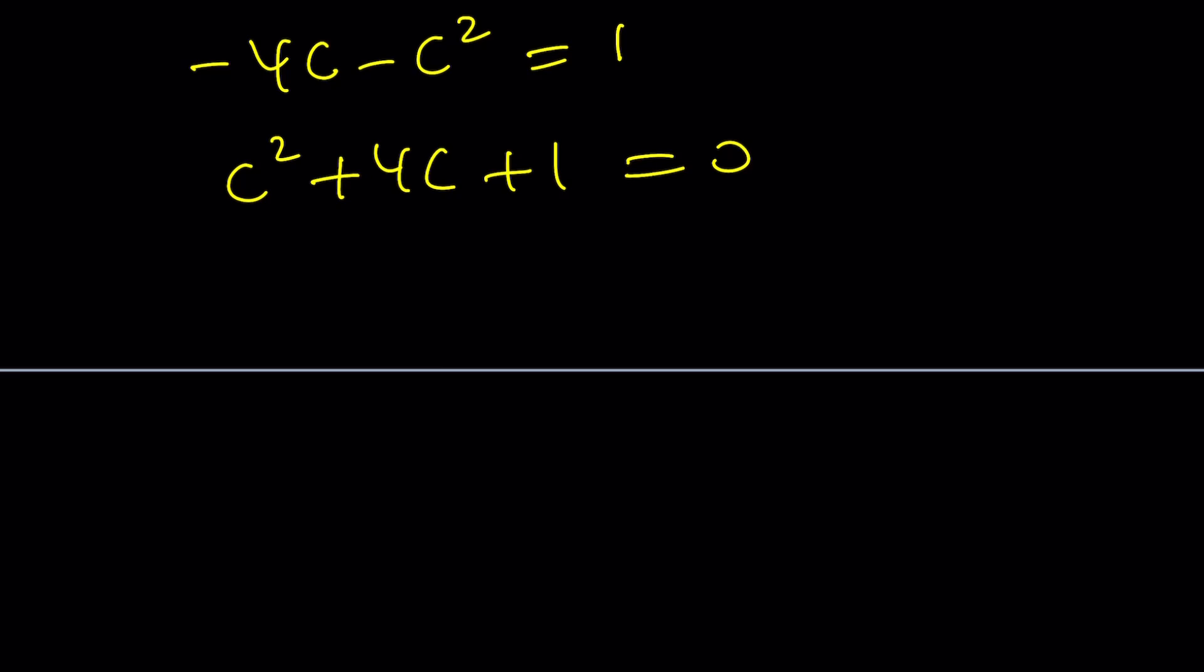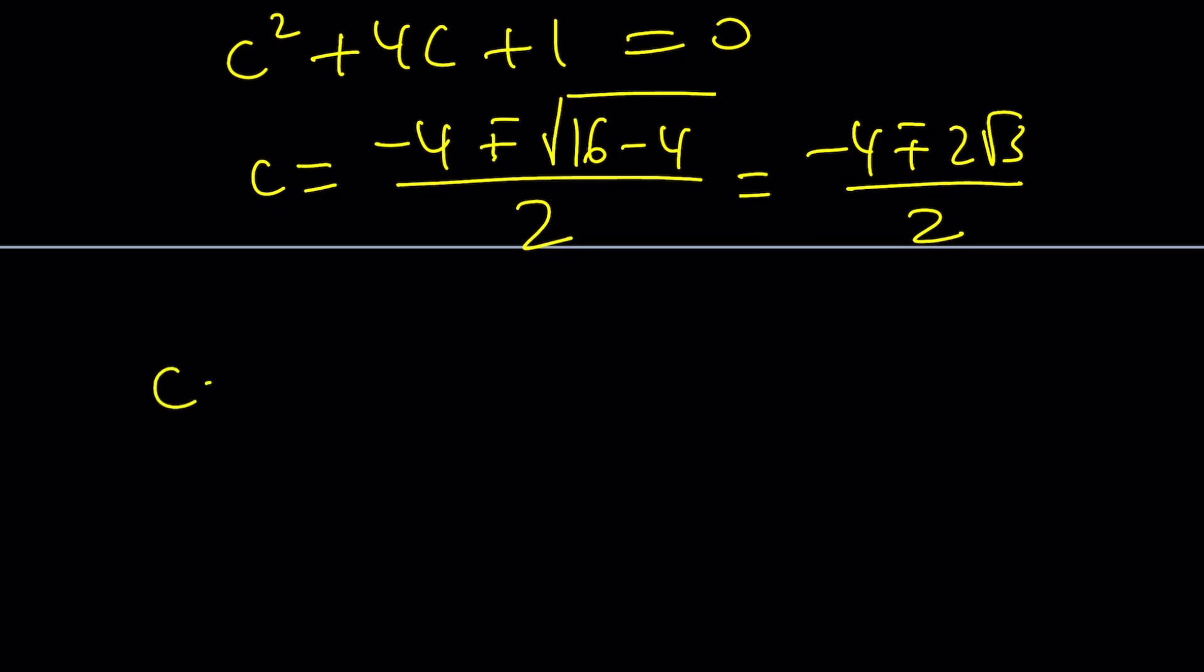How do we solve this equation? Completing the square or quadratic formula, no big deal. c equals negative b plus minus the square root of b squared, which is 16 minus 4, divided by 2. That's 12. So it's going to be 2 root 3. You see, all solutions are real. And by division, you get negative 2 plus minus root 3.